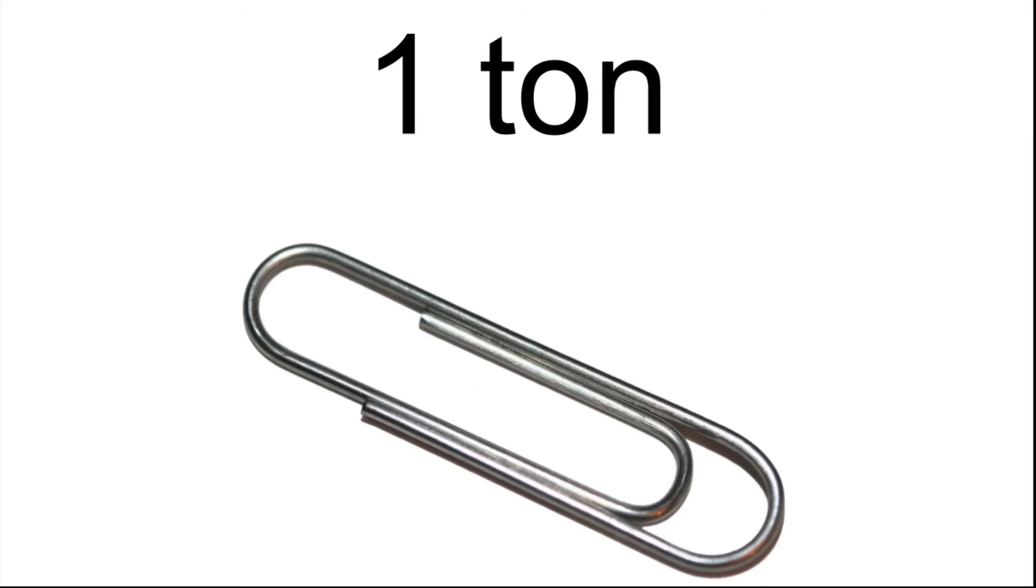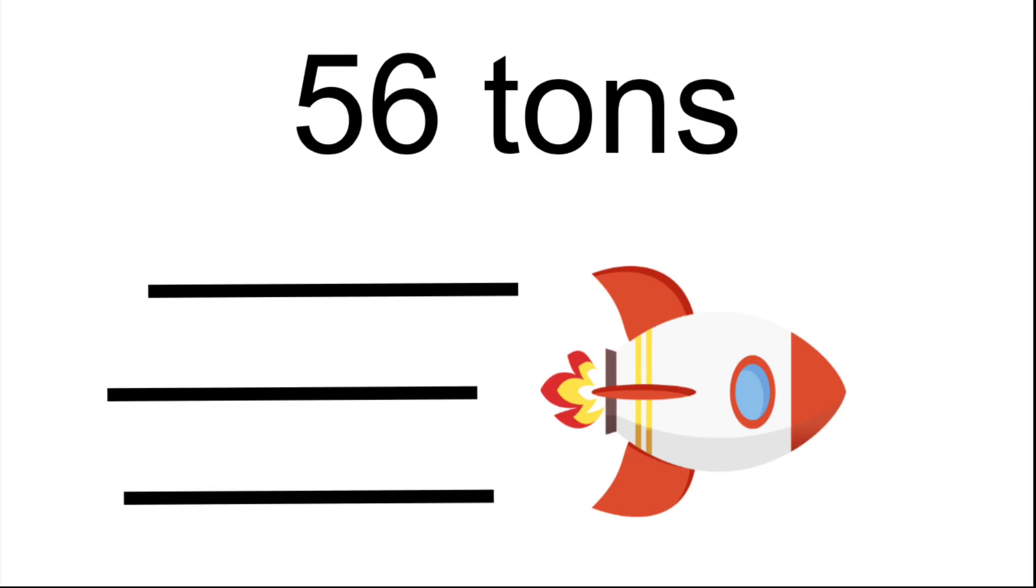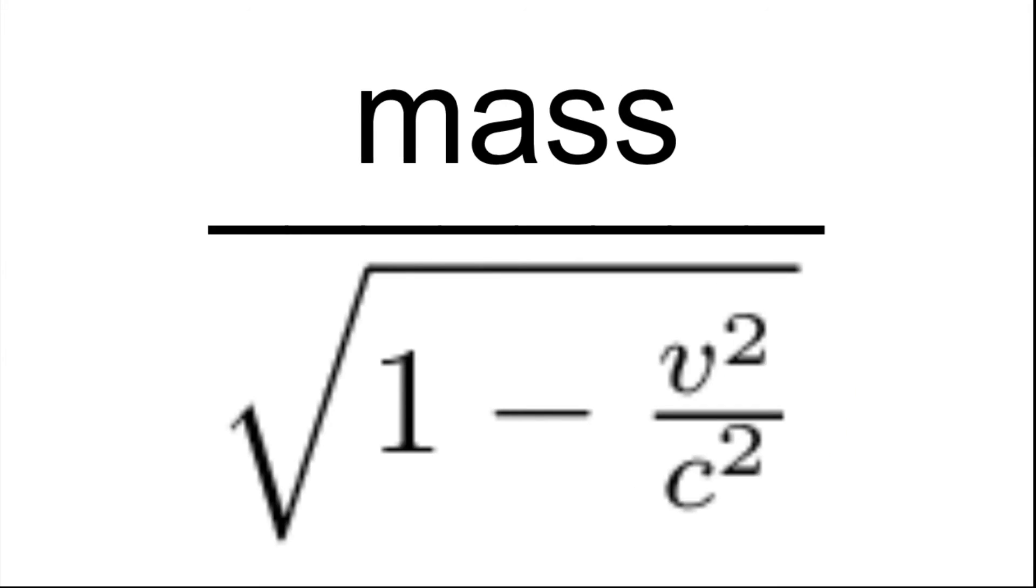Yeah, relativity is very, very weird. Now, mass dilation. This property makes things more massive as they speed up. The Lorentz factor is used to calculate this, but slightly different. Rather than multiplying the normal measure by the factor making it smaller, you divide by the Lorentz factor to increase the measure.